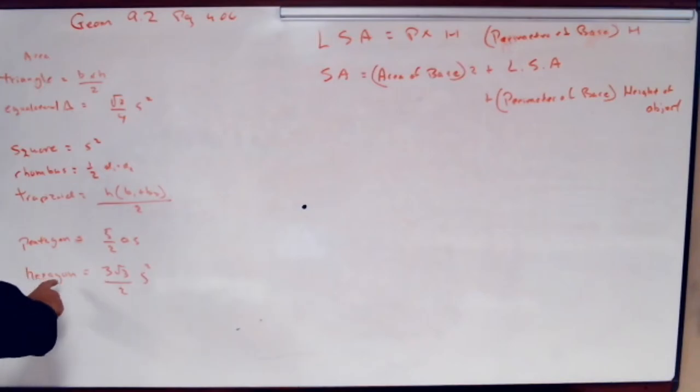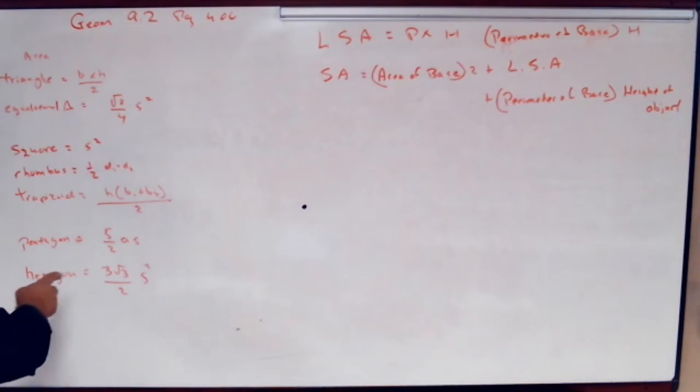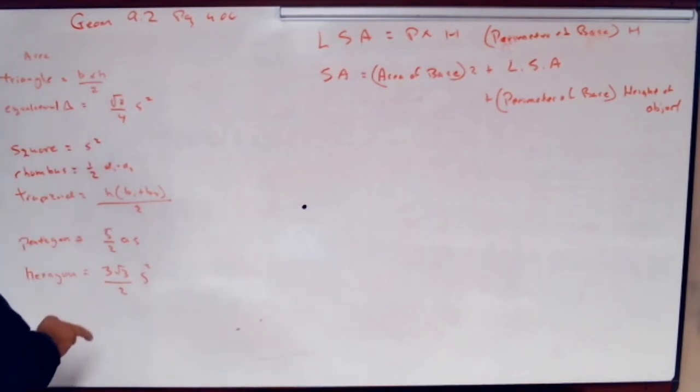What's going on in a hexagon is it's made up of six equilateral triangles. There's six equilateral triangles. That's where this comes from. If you multiply this by six, that's what you get. Just if you want to have those.